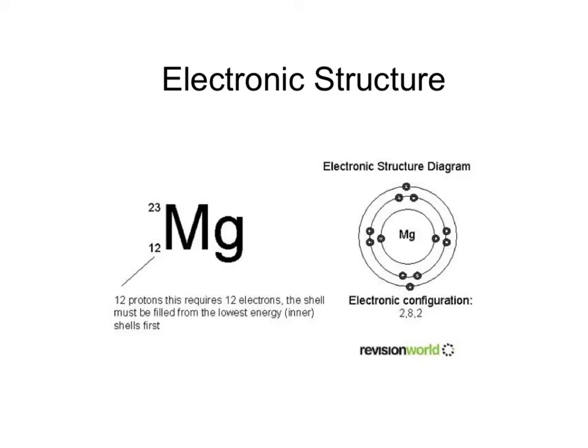This tutorial looks at electronic structure, which is a simplified way of showing how many electrons are in each shell of an atom. It relates the electronic structure to the position of an element in the periodic table and then looks at how our understanding of the structure of the atom has changed through history.